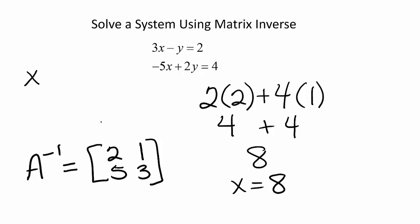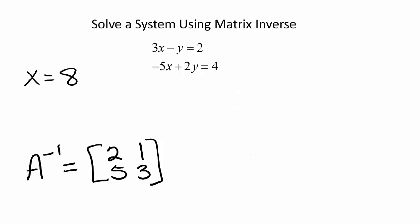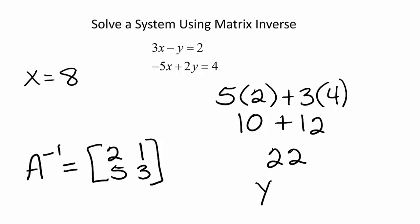Now to find our y value, we multiply the second row by the constants. So 5 times 2 plus 3 times 4. 10 plus 12 is 22. So y equals 22.